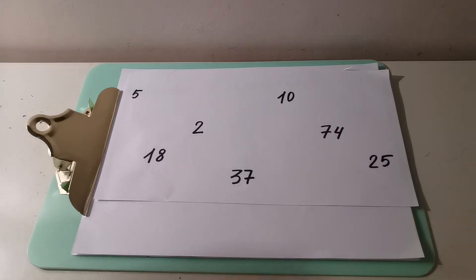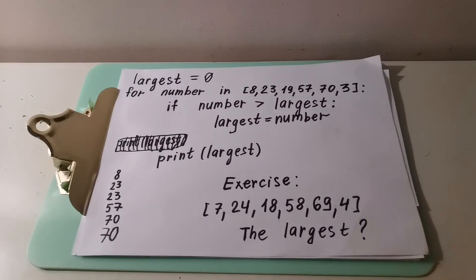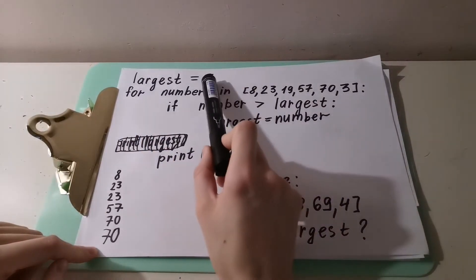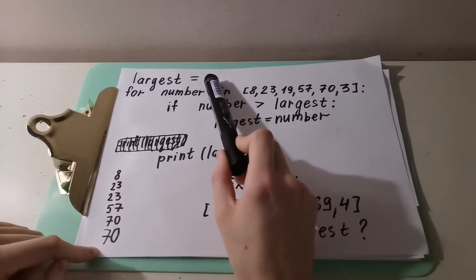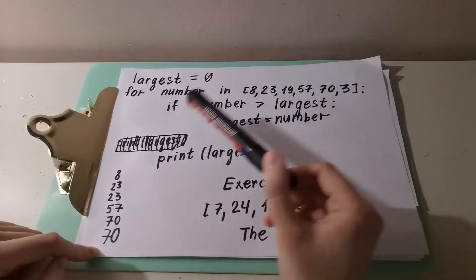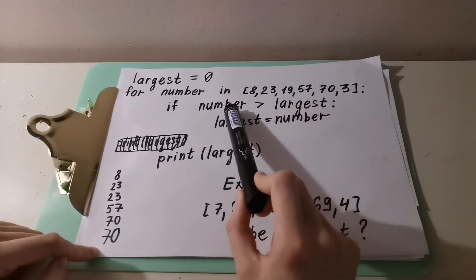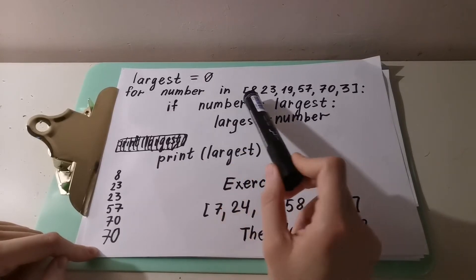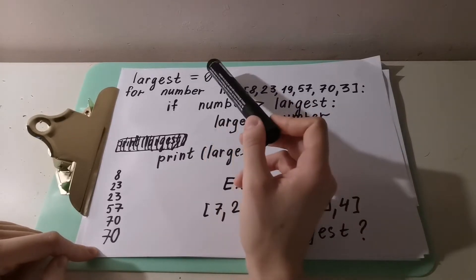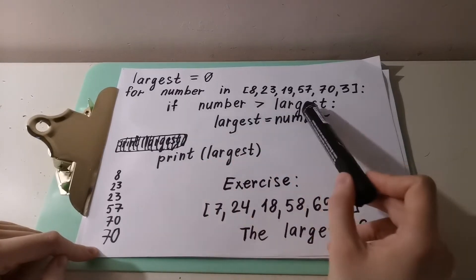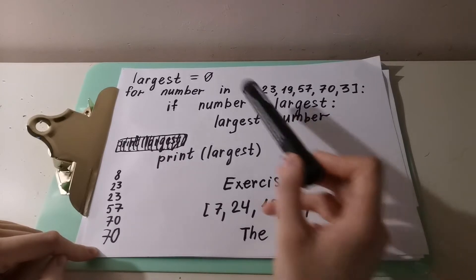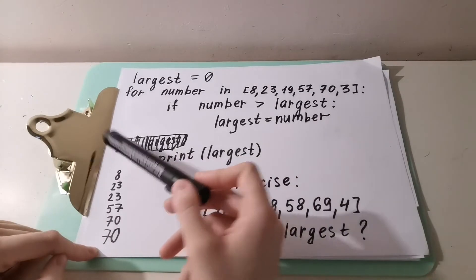Now let's remember our code when we were looking for the largest value. First of all, we created a variable called 'largest'. We stuck a very small number there — a value we supposed was less than any element in the list. Then we created a condition: if any number in the list is greater than the variable 'largest' — zero — then the variable updates and takes the value of that element. And then we print largest.